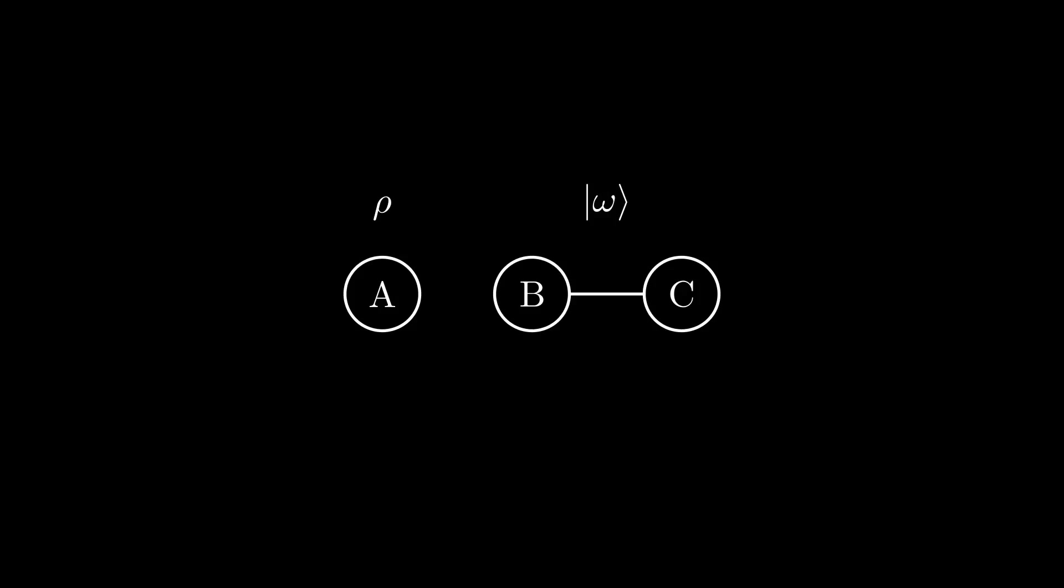For our last interpretation, we will look at Choi states. The basic premise is as follows. Suppose we have a tripartite system ABC, where A is in state ρ, and BC is maximally entangled in a state called ω, which I have defined as follows. Note that here, I am just assuming that all three systems are d-dimensional. If we are working with n qubits, of course, d will simply be 2 to the n, but I have left this as just a general dimension d for now. Here, I will use the subscript notation to indicate which system each density matrix is part of. So, even though the state itself is labeled as just ρ, if system A is in state ρ, I will say that the state is ρ_A. Or if system B is in state ρ, I will instead say that the system is in state ρ_B, and so on and so forth.